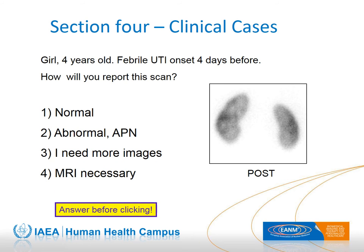Let's get started with some clinical cases. Please note that every time there is a question to answer, there is a yellow box in the slide warning that the next click will show you the right answer, so think first on the correct answer. Pay attention to the sex of the child — congenital high-grade reflux has a male prevalence, and reflux associated with bladder voiding dysfunction is more common in females. The first case deals with a young girl with classic febrile UTI and a DMSA scan performed during the acute phase of infection.